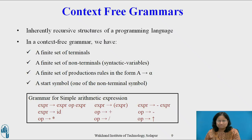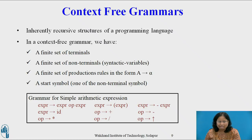Context-free grammars. Many programming language constructs have an inherently recursive structure that can be defined by context-free grammar. In a context-free grammar, we have a finite set of terminals, a finite set of non-terminals, a finite set of productions in the form A derives alpha — where A is a non-terminal and alpha is a string of terminals and non-terminals including the empty string — and a start symbol. The grammar for a simple arithmetic expression is given below.